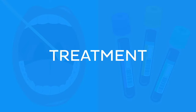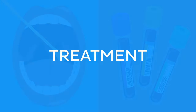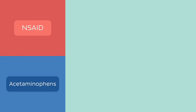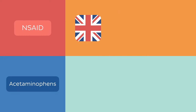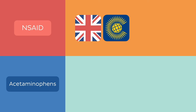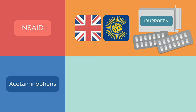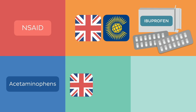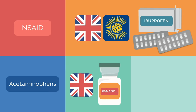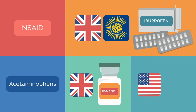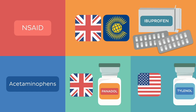The primary goal in therapy is to alleviate pain. Therefore, medications from the group of non-steroidal anti-inflammatory drugs and acetaminophen can often help. In the UK and the Commonwealth, the NSAID most commonly used is ibuprofen. Acetaminophen is more commonly known as paracetamol and is often sold under the brand name Panadol. In the US, the acetaminophen brand you may know best is Tylenol.